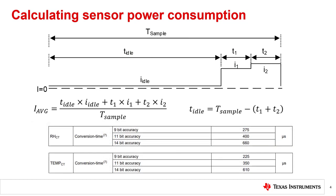Similarly, the values for T1 and T2 are listed as the conversion times inside the HTC2 family datasheet. While you do not have the ability to change the active current in most sensors, you can in many sensors change the level of resolution or precision, and therefore the time of conversion. In this snippet of the tables from the HTC2 family, you have the option to choose 9, 11, or 14-bit resolution for humidity or temperature measurements. Reducing these values can be a valid strategy for reducing power consumption and increasing runtime in battery-powered applications.